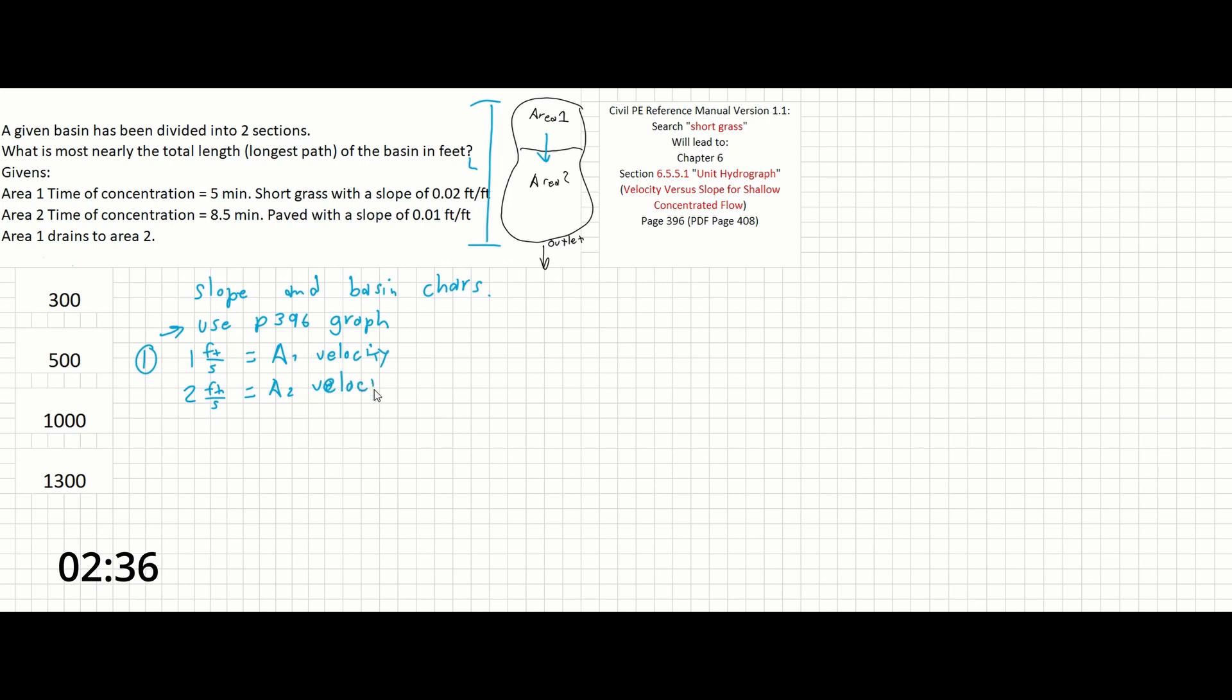Once we've found the velocity for each area, all we have to do is multiply each area's velocity by its respective time of concentration. For area 1: 5 minutes times 60 seconds per minute times 1 foot per second gives us 300 feet, with minutes and seconds canceling out.